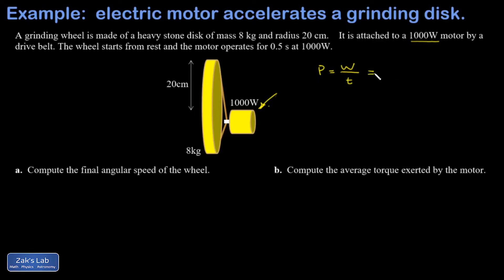So what do you do to find the total energy transfer if you know the power? You take power times time, and that's going to be a thousand watts times half a second. And I get 500 joules of energy. So during this process, 500 joules of energy has been dumped into the rotation of this grinding wheel.